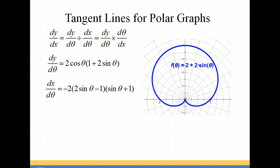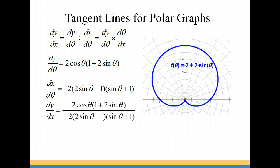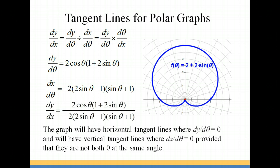Now that I have dy/dθ and dx/dθ, I can find dy/dx. Remember that dy/dx is simply the quotient of dy/dθ and dx/dθ. So we have 2 cosine theta times 1 plus 2 sine theta in our numerator, and the dx/dθ in our denominator. If we're looking for horizontal tangent lines, that's going to be where dy/dx is equal to 0. The only place that dy/dx can equal 0 is where the numerator is equal to 0, so we're setting dy/dθ equal to 0 to find any possible horizontal tangent lines.